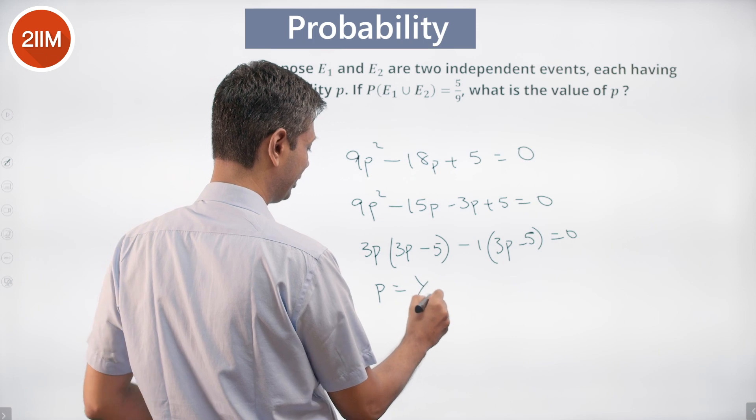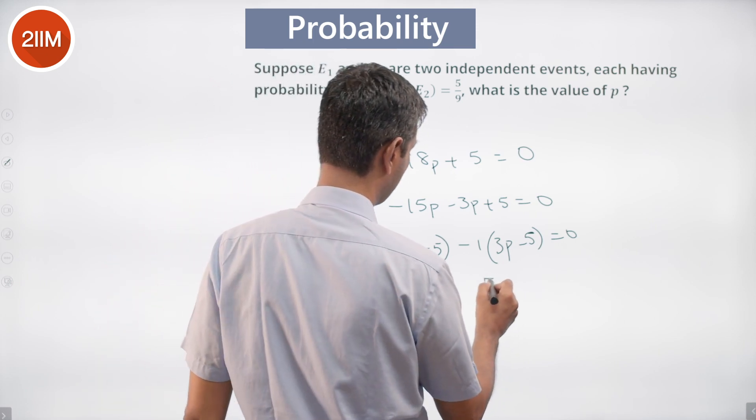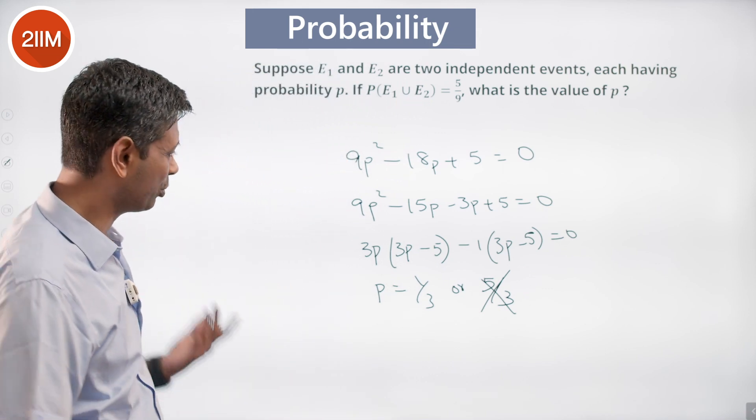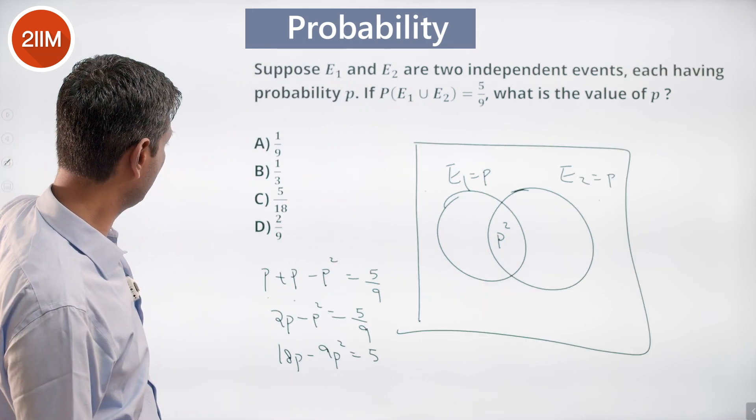Probability is either 1 by 3, 3p minus 1, or 5 by 3. It really cannot be 5 by 3. It has to be 1 by 3. We are talking about probabilities here. 1 by 3 is the answer.